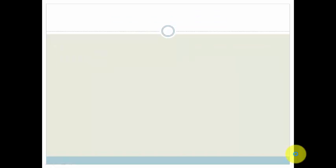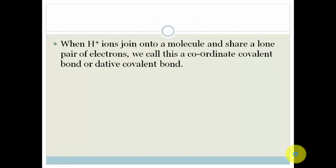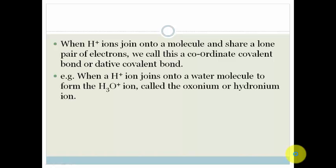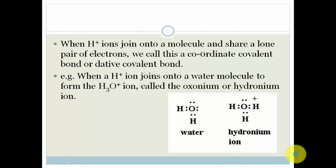So let's look at an example. When hydrogen plus ions join onto a molecule and share a lone pair of electrons, we call this a coordinate covalent bond or a dative covalent bond. So an example is when you have a hydrogen plus ion and it joins onto a water molecule, then what happens? You get a hydronium ion or oxonium ion.